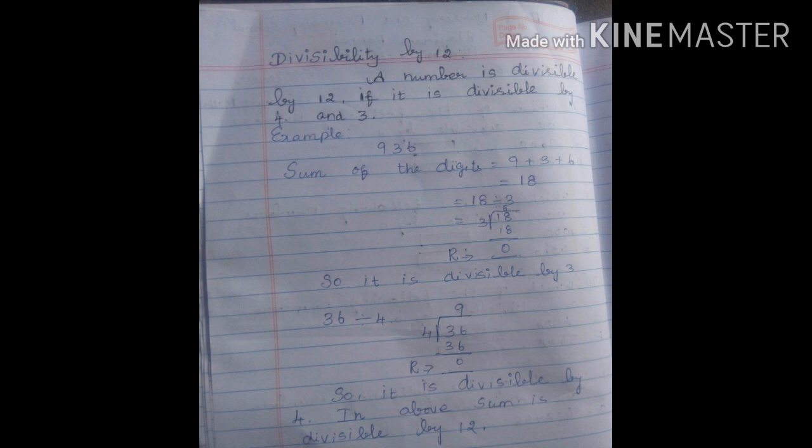Next, let's take the last 2 digits. For the number 936, we take 36. We have to divide 36 by 4. The remainder value is 0, so it is divisible by 4. So in the above sum, 936 is divisible by 12. Okay students, so rule 3 and rule 4 apply like this.